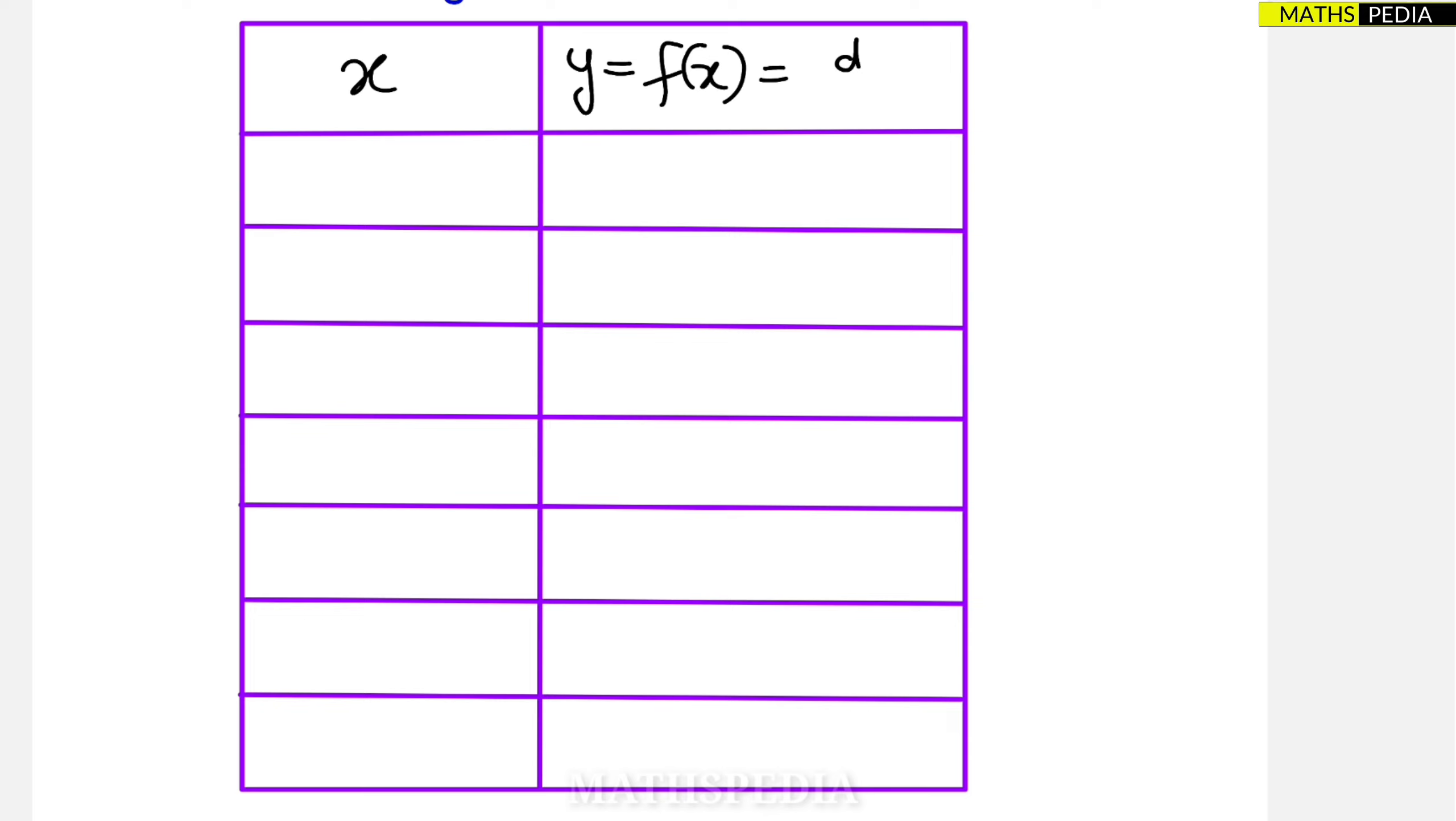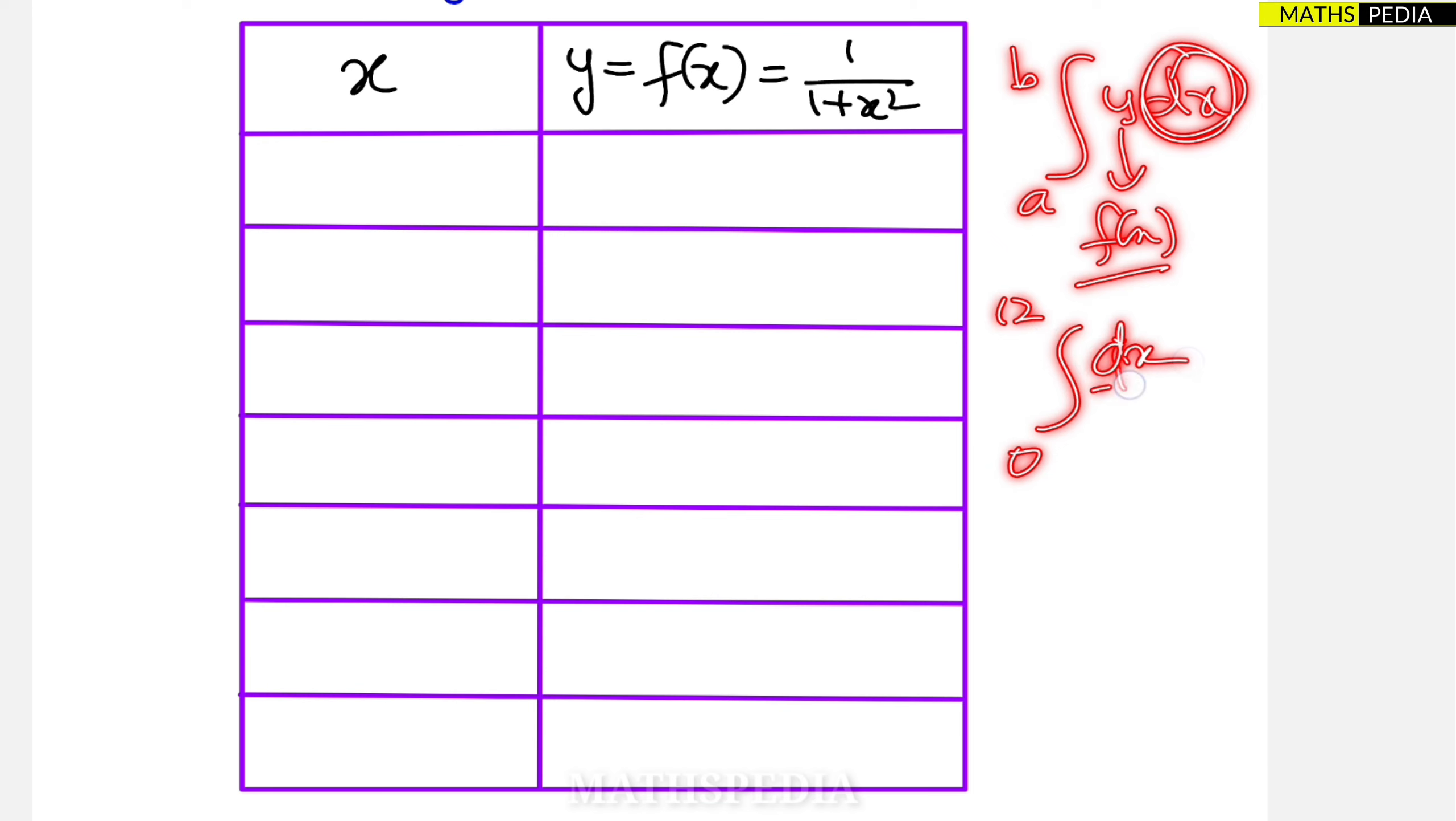So it is dx by 1 plus x square, but f of x we have to consider only what? 1 by 1 plus x square. This is the f of x value. That means y value. See, because we have considered interval a to b y dx, so we should not consider dx because y is only f of x. So while comparing 0 to 12 dx by 1 plus x square, the basic meaning is that 1 by 1 plus x square is nothing but y.